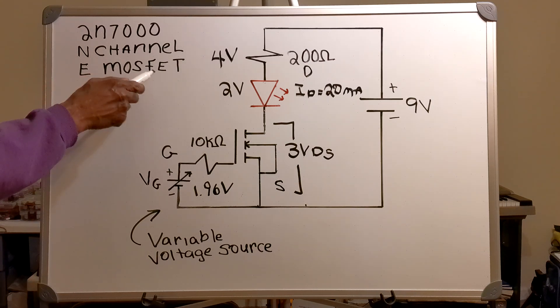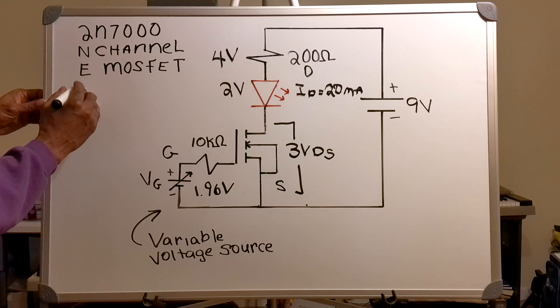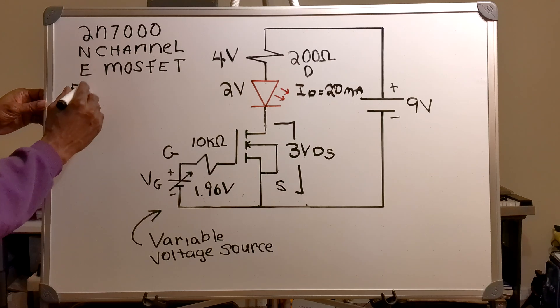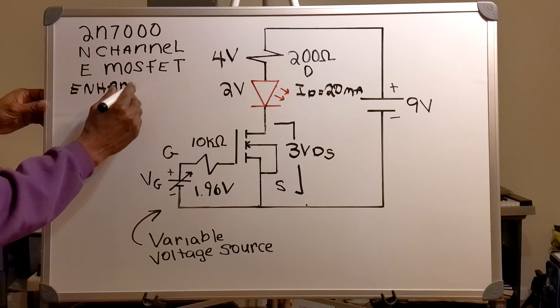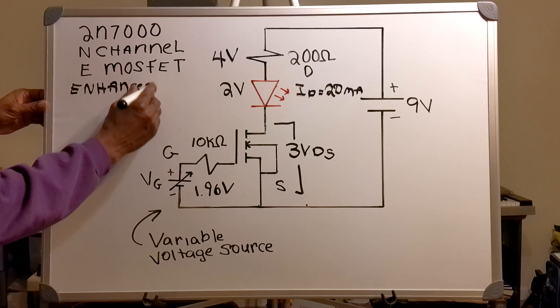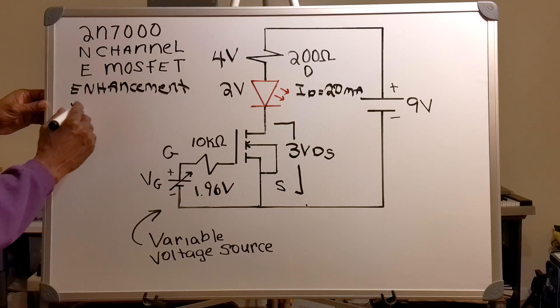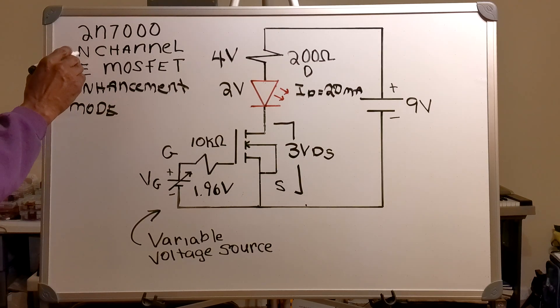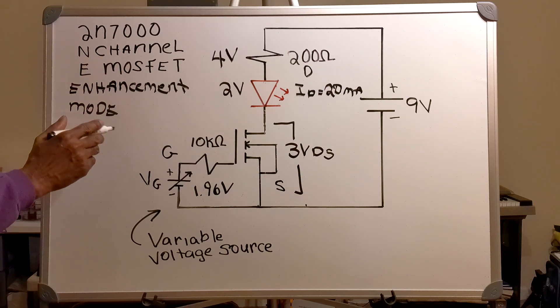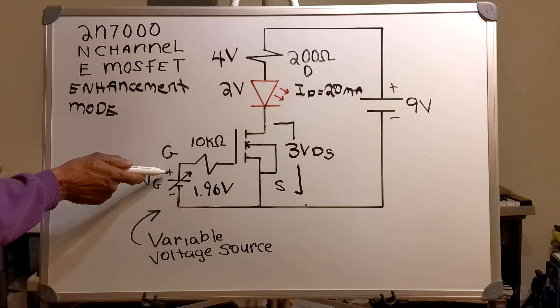The E in MOSFET means enhancement mode. And that means that the voltage applied at the gate has to be a positive voltage.